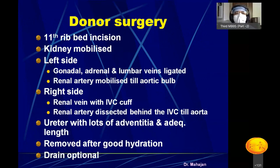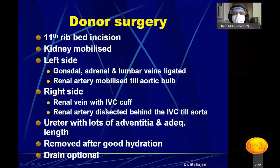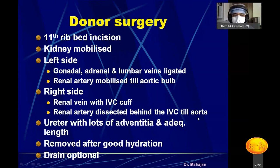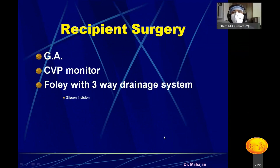During donor surgery, an 11th rib incision is made and the kidney is completely mobilized. On the left side, the gonadal, adrenal, and lumbar veins are ligated, and the renal artery is mobilized to the aortic origin. On the right side, the renal vein is short because it immediately enters the IVC, so an IVC cuff is taken with the renal vein to give adequate length. The ureter is dissected with ample adventitia. Once good hydration and urine output are confirmed, the ureter is cut, vessels are tied, and the kidney is removed.